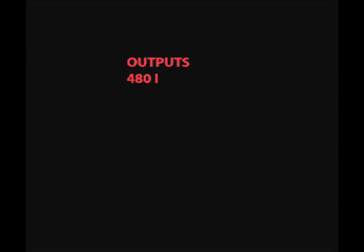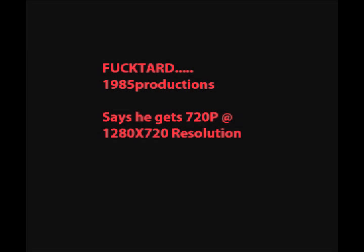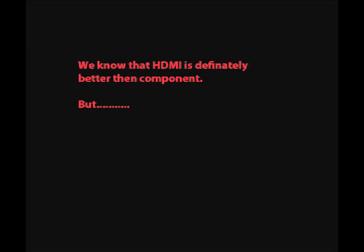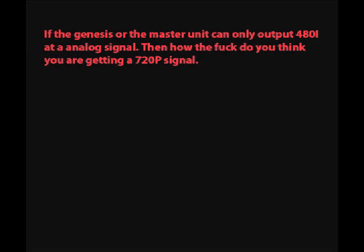We know the Sega Genesis outputs 480i, max resolution of 320 by 224. But one YouTube creator claims he gets 720p at 1280 by 720 resolution — which is high def — by using a SCART to HDMI converter. We know HDMI is definitely better than component, but if the Genesis or Master Unit can only output 480i at an analog signal, how do you think you're getting a 720p digital signal?